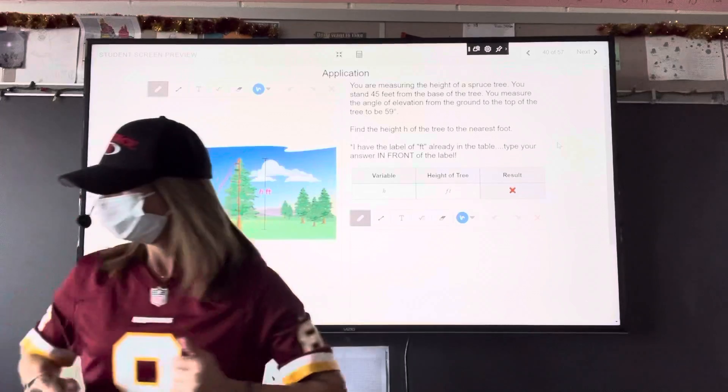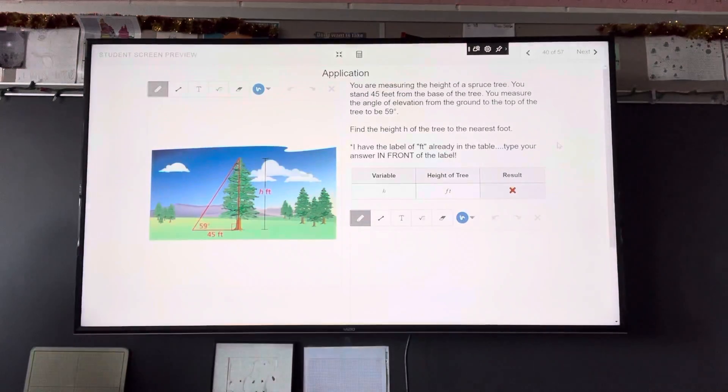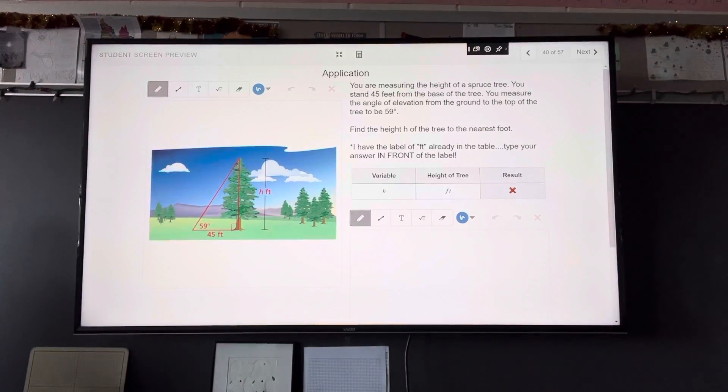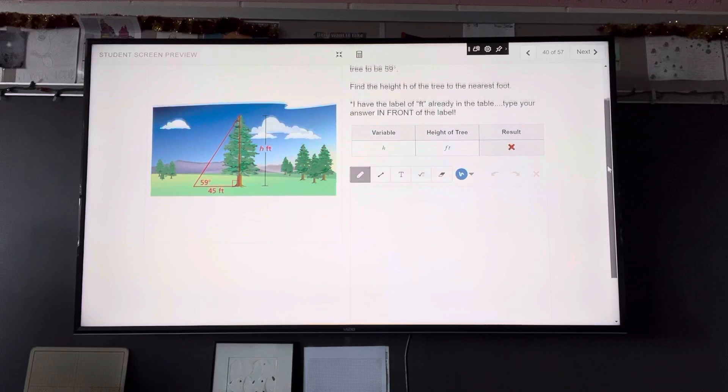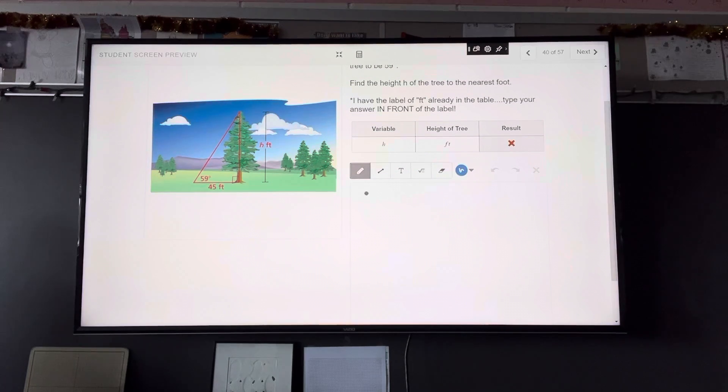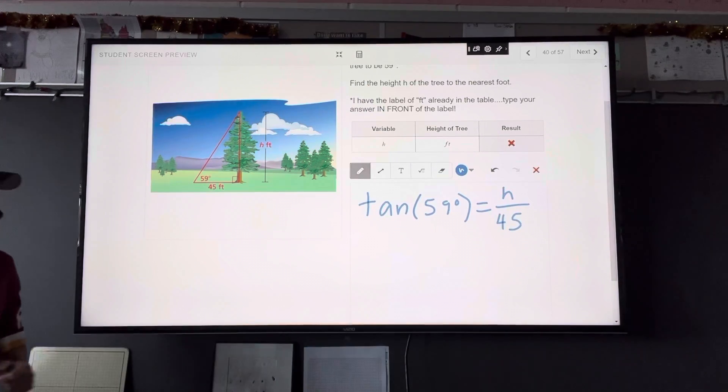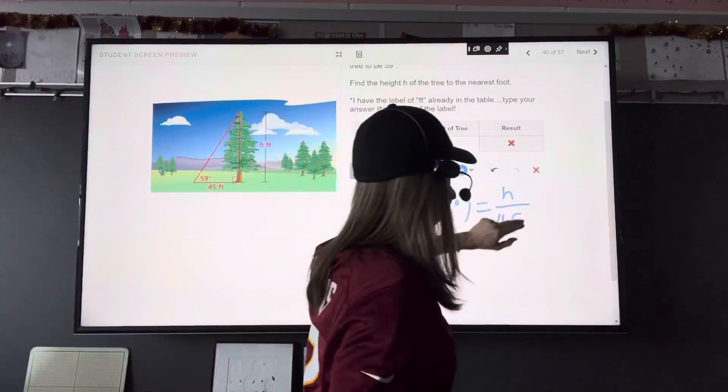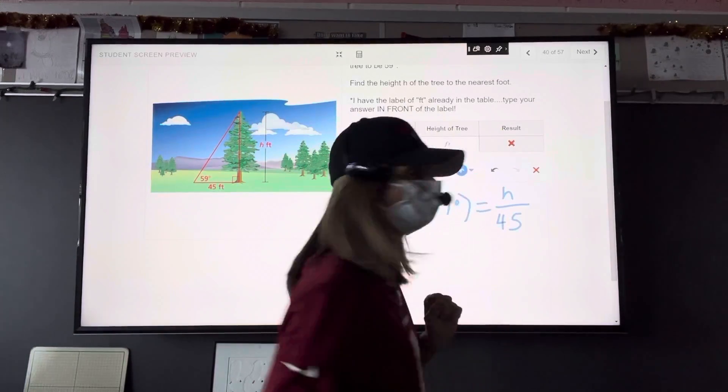Okay, so let's write it. The tangent of 59 degrees equals opposite, that's our unknown, over adjacent. Our unknown is in the numerator, so we're just going to multiply both sides by 45.